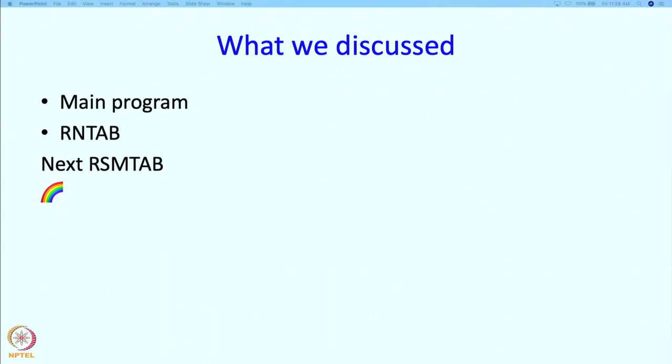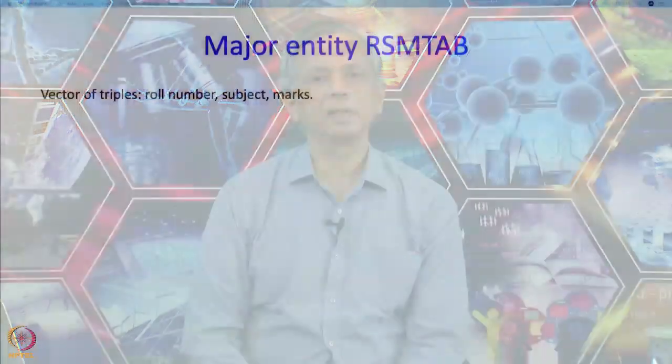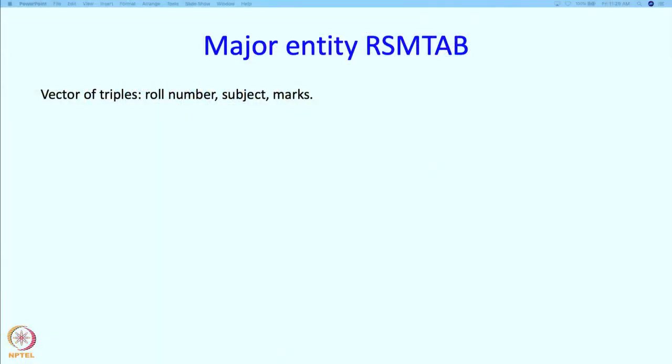Welcome back. In the last segments, we have been talking about the manual program, the program inspired by the manual algorithm. We have already discussed the main program and the RN tab, the table which gives us the translation from the name to the role number. In this segment, we will talk about the RSM tab, the table which contains information about the marks obtained by a student with a given role number in a given subject. This is the second major entity in our program after the RN tab.